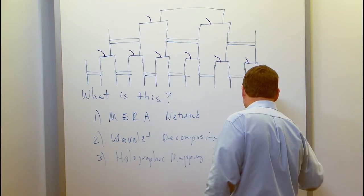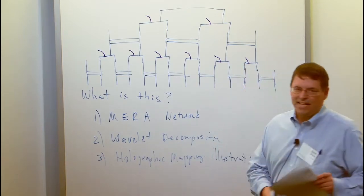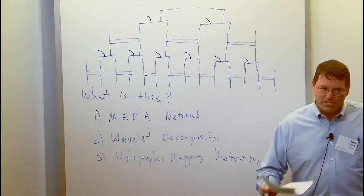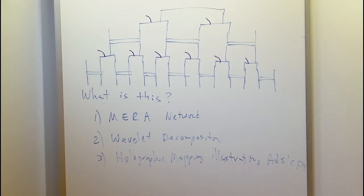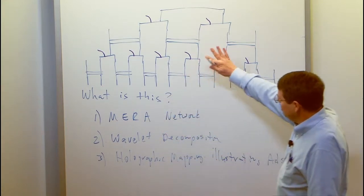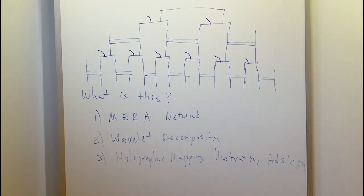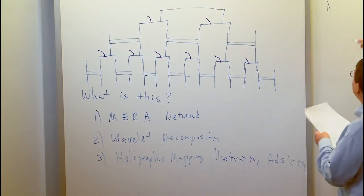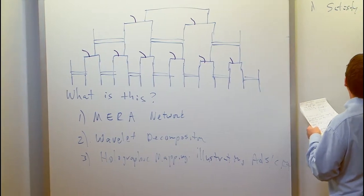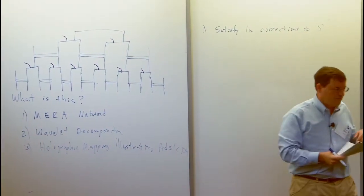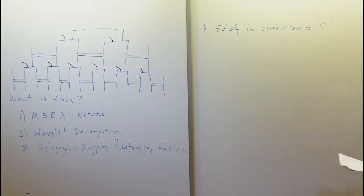This illustrates the ADS/CFT correspondence. The answer is that this sort of mapping applies to all three — it's a very interesting connection between these areas that hasn't been appreciated too much before. You can draw the same diagram for each of these areas, but the way you talk about it and the systems they're applied to are quite different. For instance, in the MERA network, we talk about using this to satisfy log corrections to the area law.